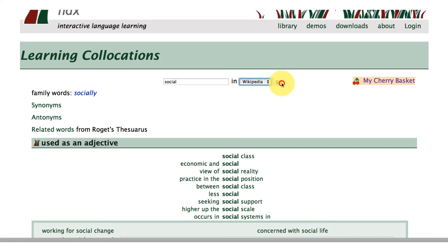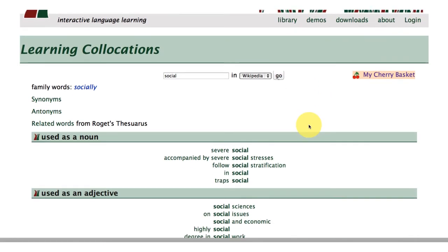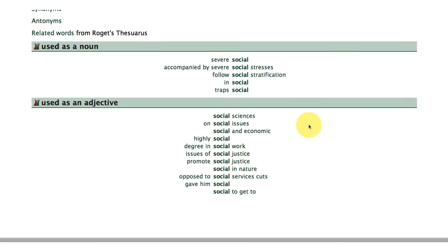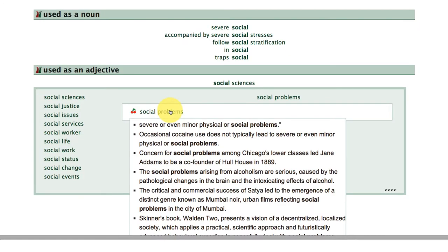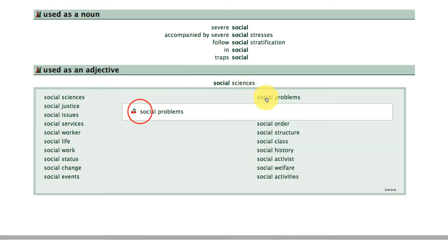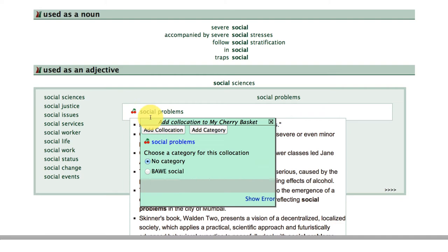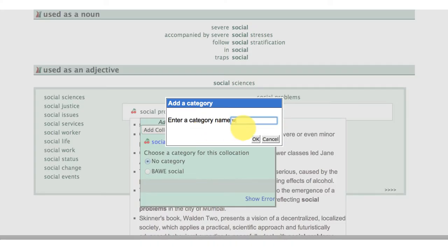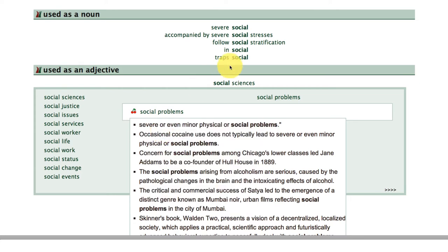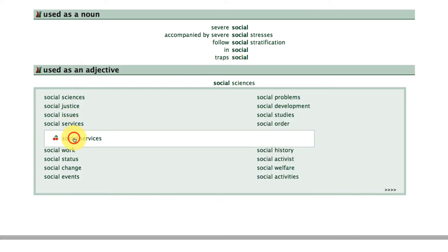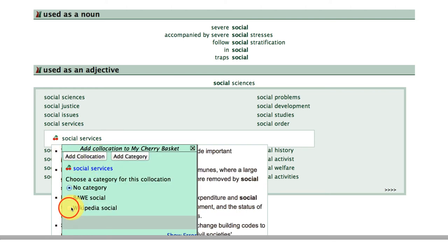I'm going to look inside Wikipedia to see how the word 'social' is collocating in this corpus. It's a much larger corpus and we can see the same word used as a noun as well as an adjective. I'm going to add this to my cherry basket and I'm going to create a new category now called 'Wikipedia Social.' And I'm just going to add that there. Let's take a look at 'social services' — that looks useful as well, so I'm also going to add that to the Wikipedia Social category.